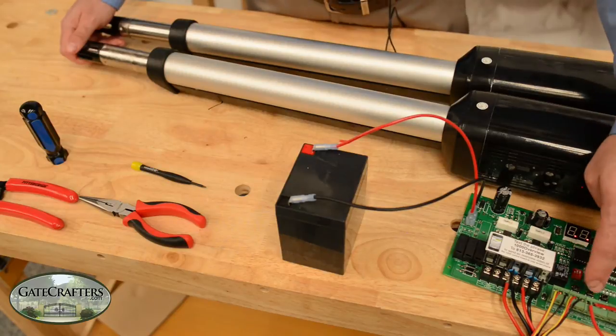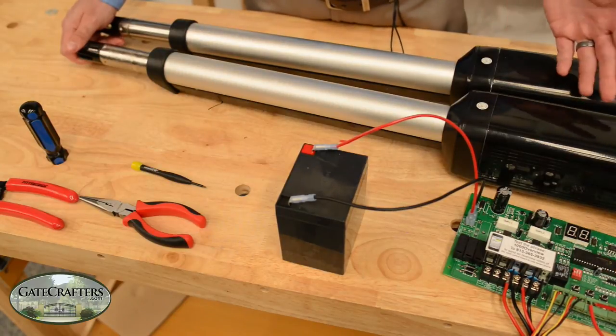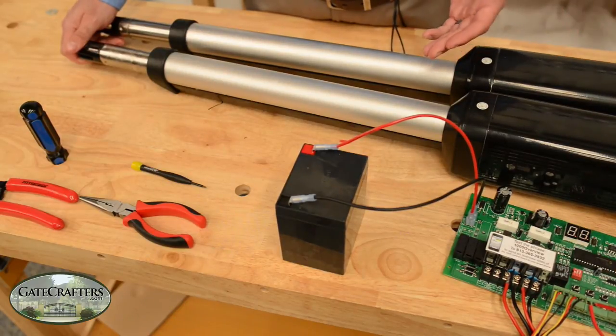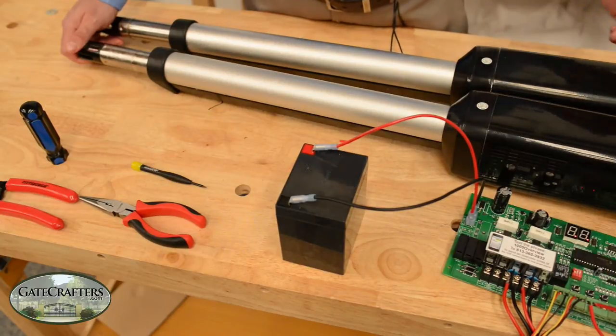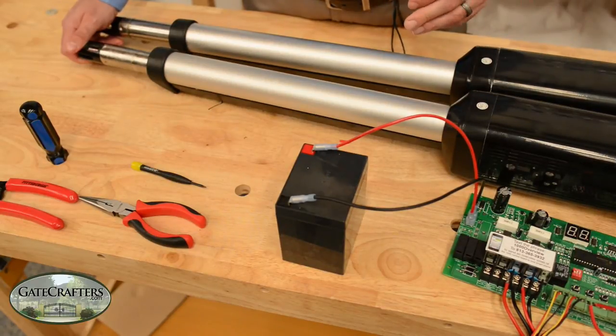We're going to now trigger it to go closed. We saw a CL and then it didn't move. Press it again. Now nothing happens.